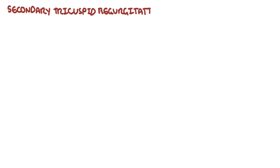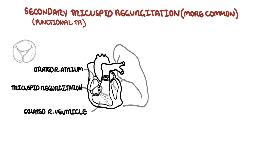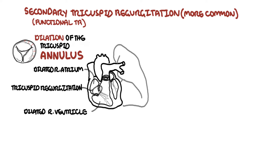Secondary tricuspid regurgitation is more common. It is a functional problem due to dilatation of the right atrium and right ventricle with dilation of the tricuspid annulus. These changes are often caused by pulmonary hypertension — increased pressure in the pulmonary arteries increases pressure in the right ventricle, leading to right ventricular and right atrial dilation.